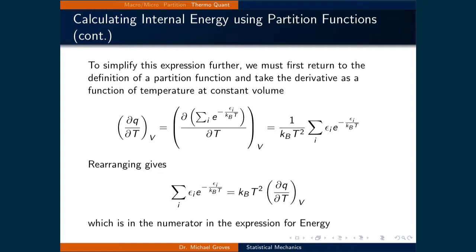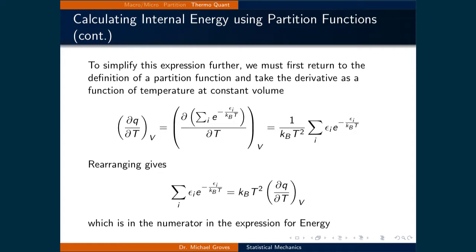To simplify this expression further, we return to the definition of the partition function and take the derivative as a function of temperature at constant volume. The partial derivative of Q with respect to T at constant volume equals the derivative of the sum over i of e to the power of negative e_i over k_B T, which gives 1 over k_B T squared times the sum over i of e_i times e to the negative e_i over k_B T. Rearranging, the sum over i of e_i times e to the negative e_i over k_B T equals k_B T squared times the partial derivative of Q with respect to T at constant volume.